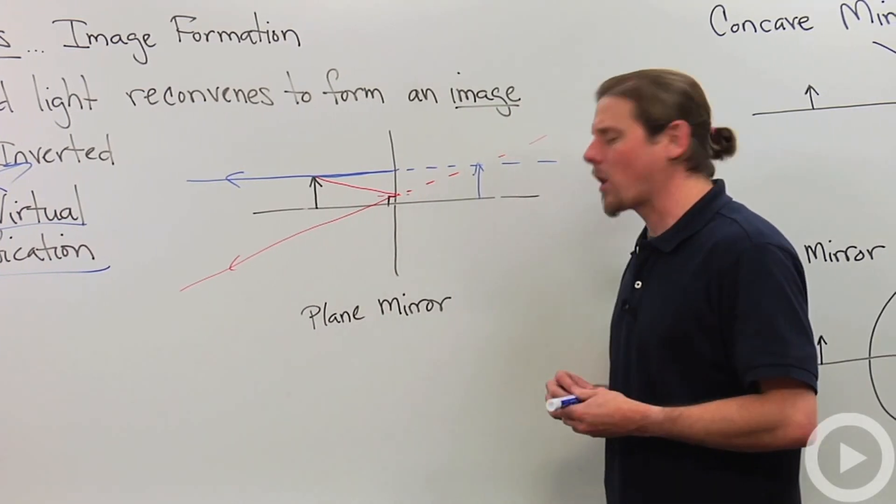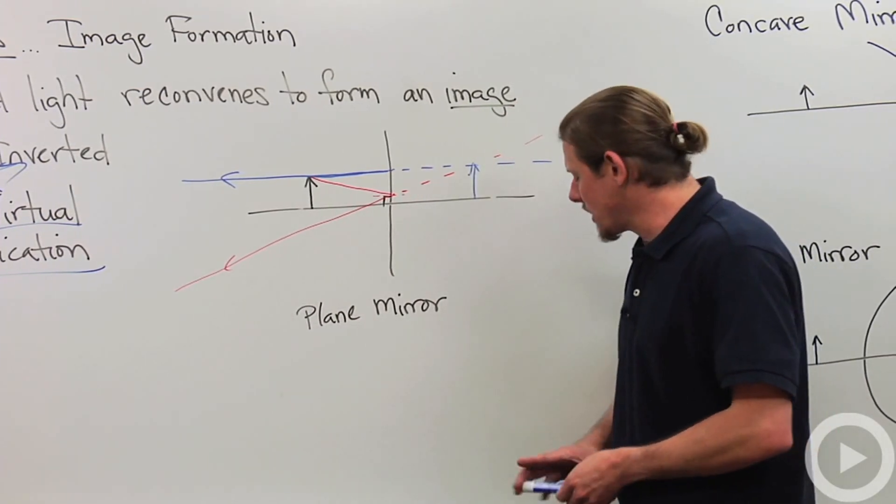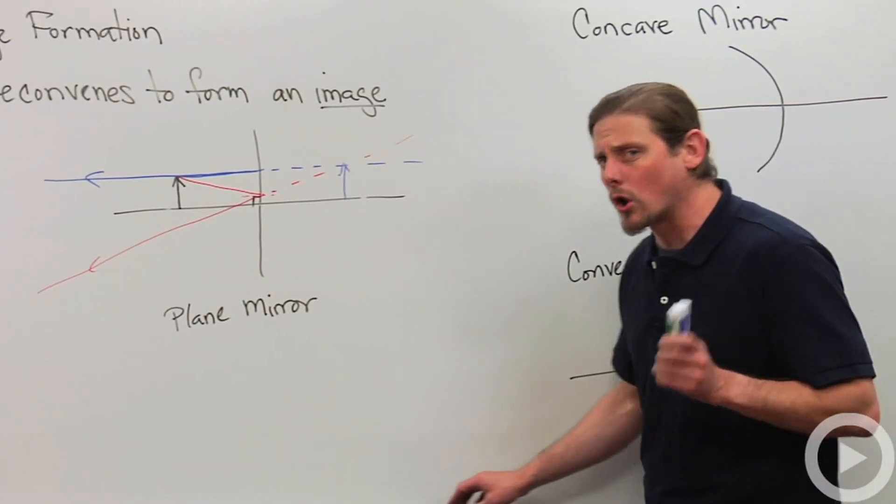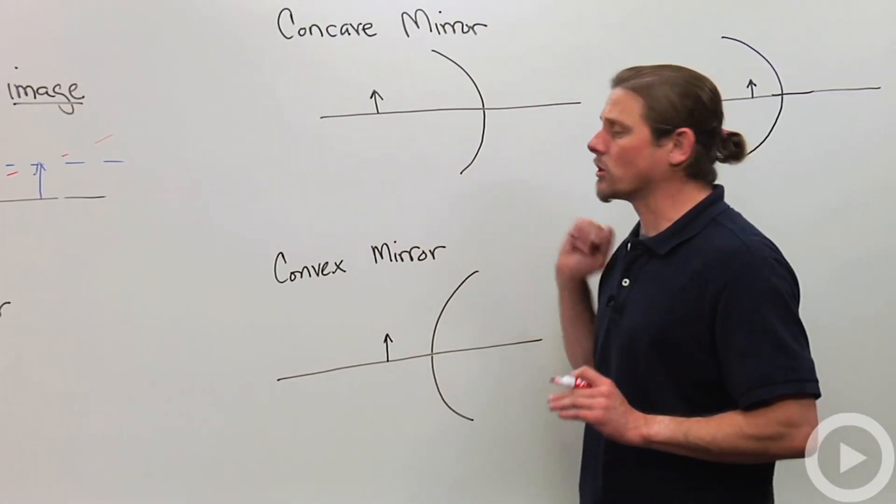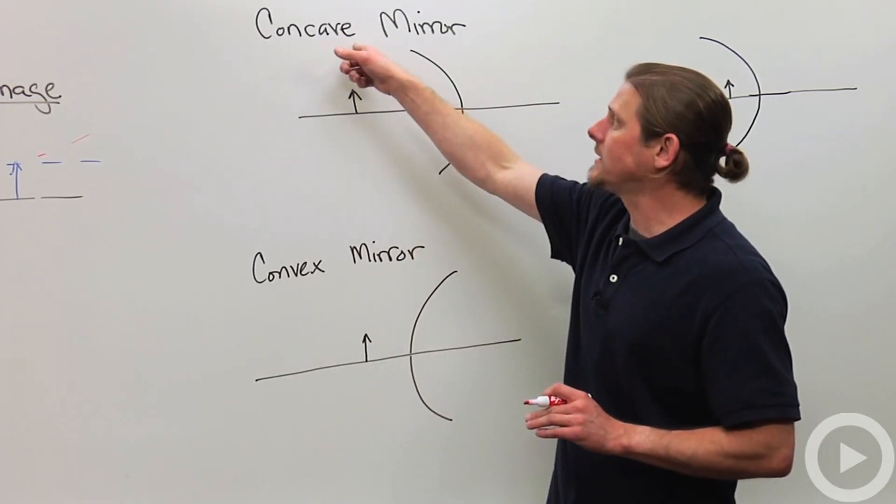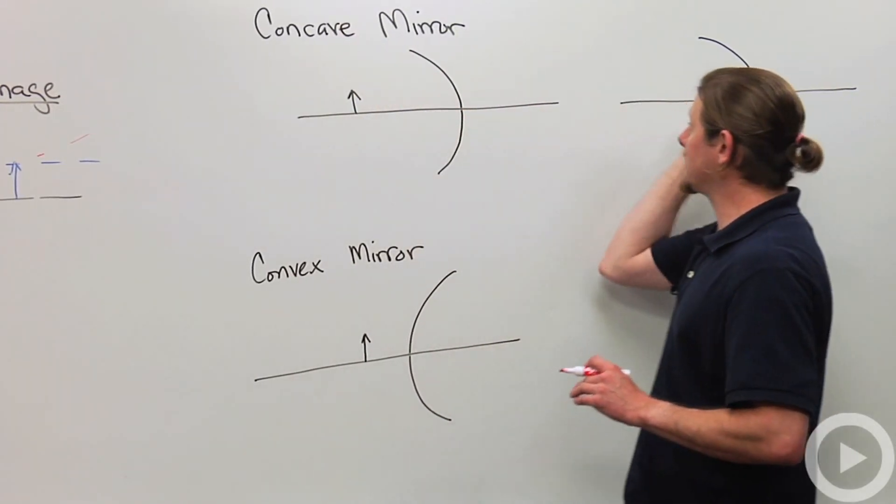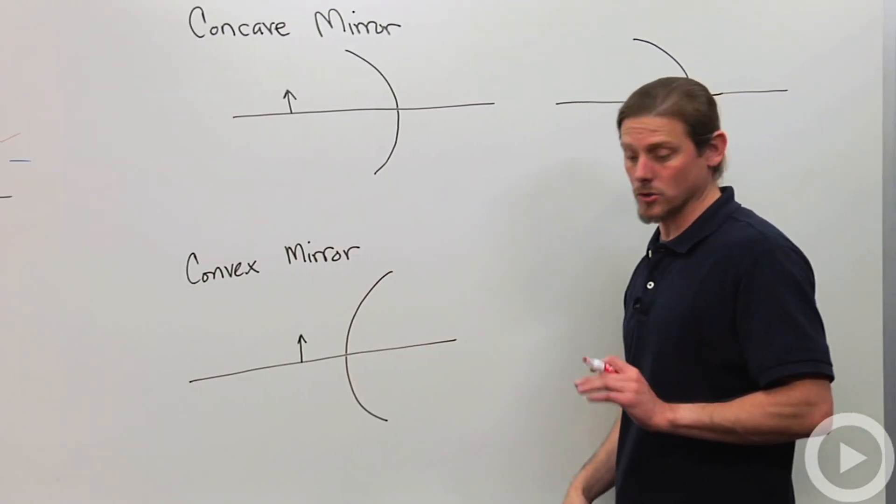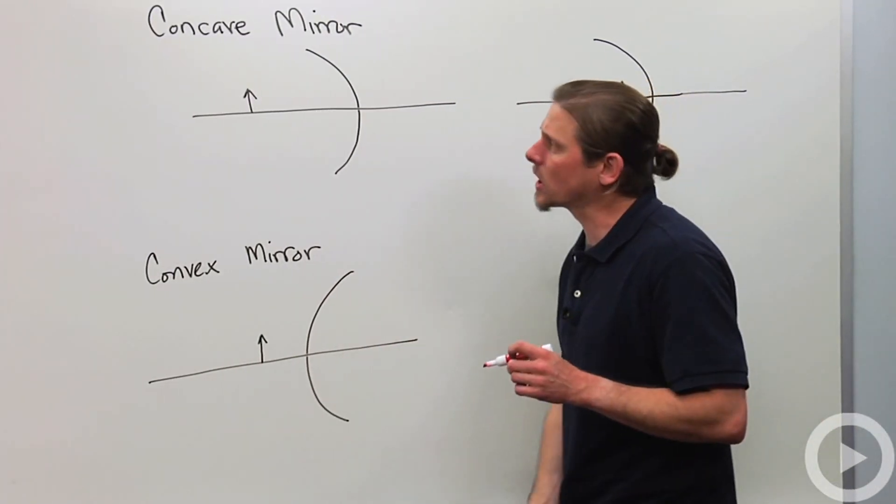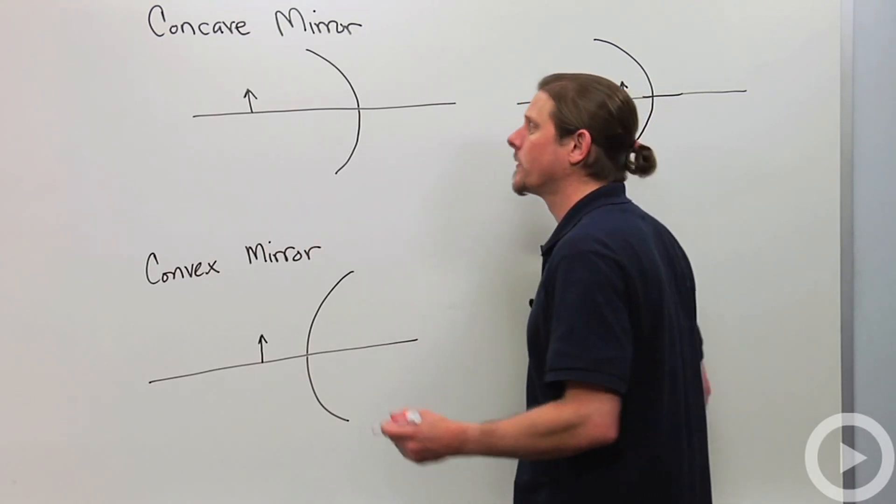So let's look at slightly more complicated cases, and these are the cases associated with curved mirrors. Now we need to do this kind of carefully. There's three major cases: the concave mirror, two cases of that, and the convex mirror, only one case there. Let's look at the concave mirror first.